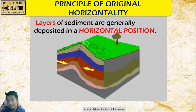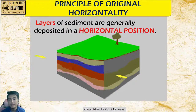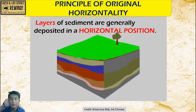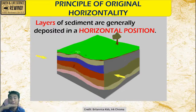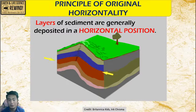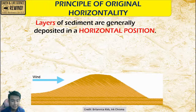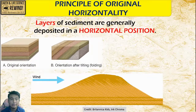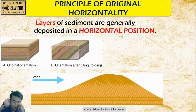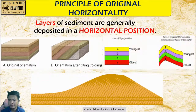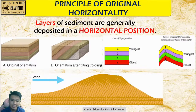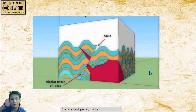Another idea to follow is horizontality, which means that layers of sediment are always in a horizontal position whatever happens. The angles can be changed by wind, other factors like tectonic movements, earthquakes, or even plate boundaries. But the idea stays the same — they are always in a horizontal position.